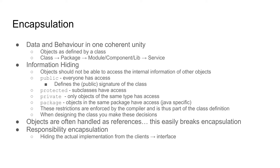The next level of information hiding is to use protected attributes or operations. This means that subclasses of the parent class have access to these attributes or operations. This can be useful if you have some attribute or operation that you need to call from a subclass — then you can use the protected keyword.